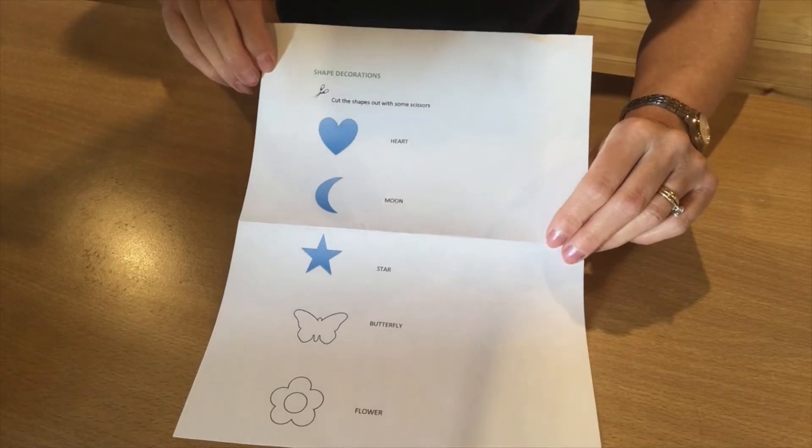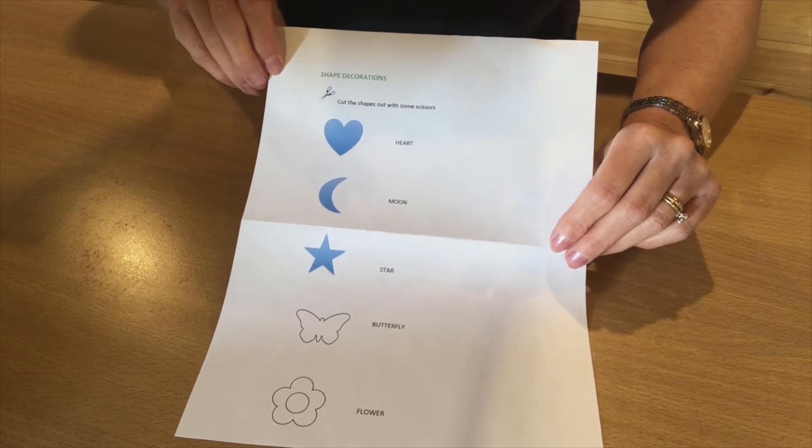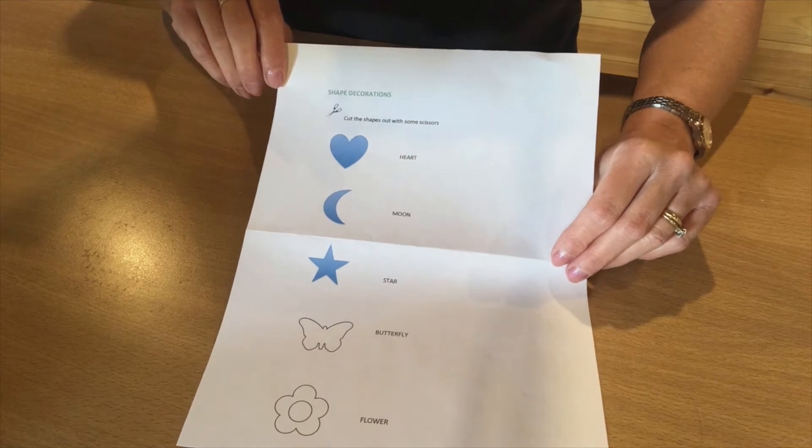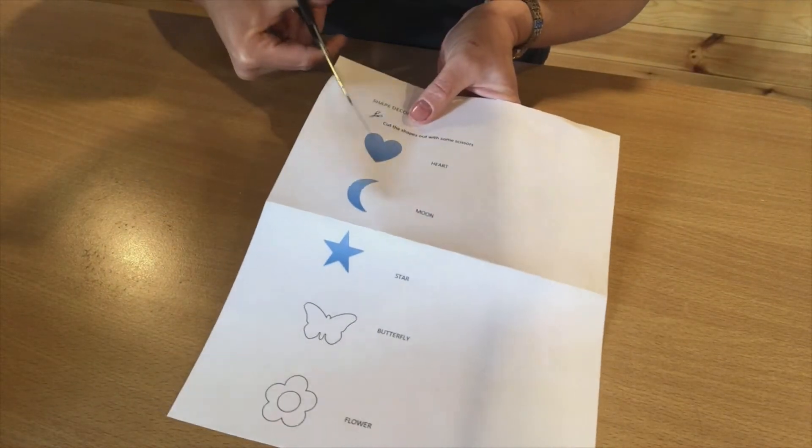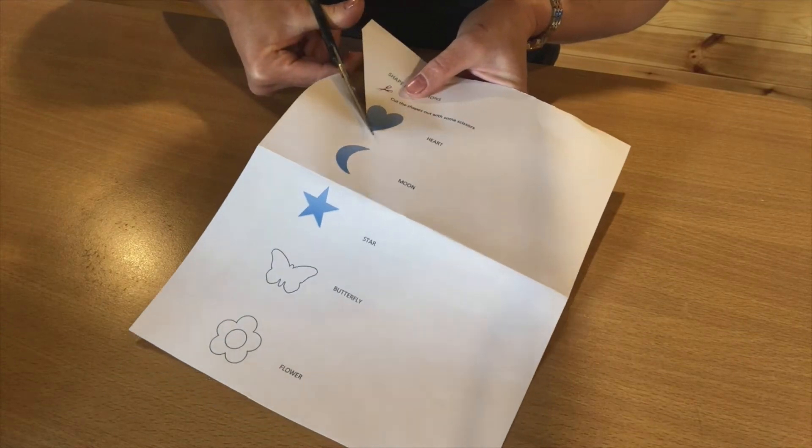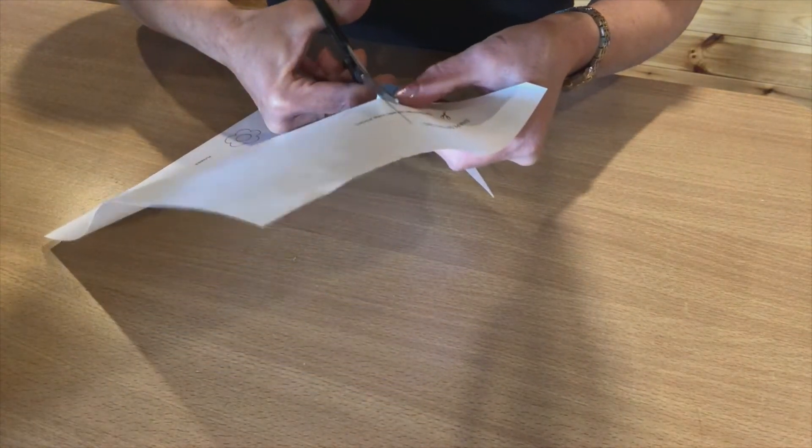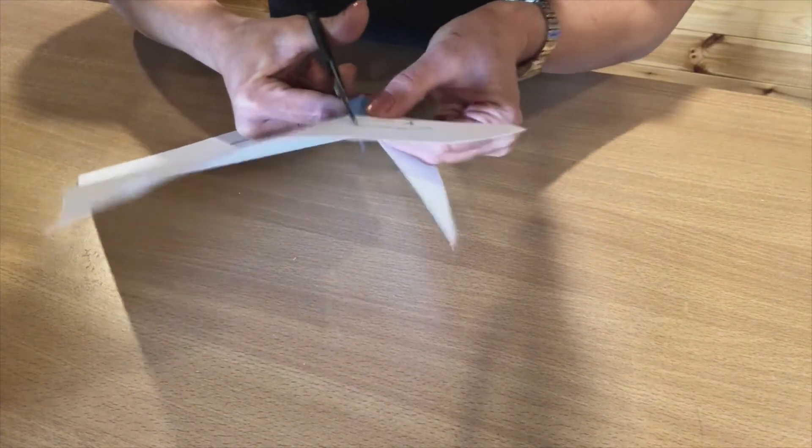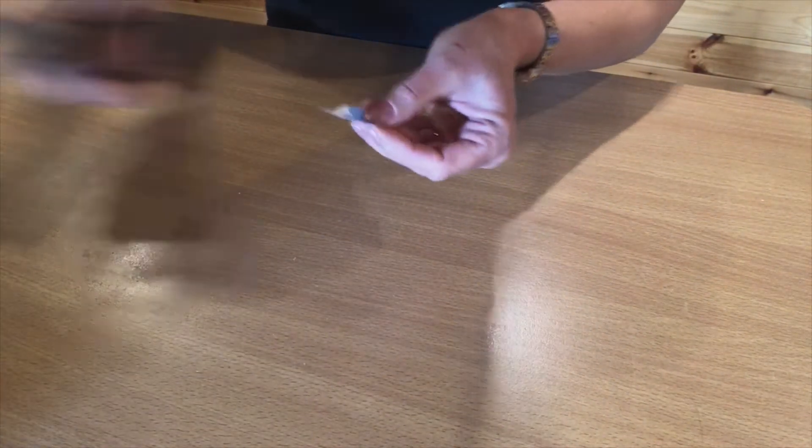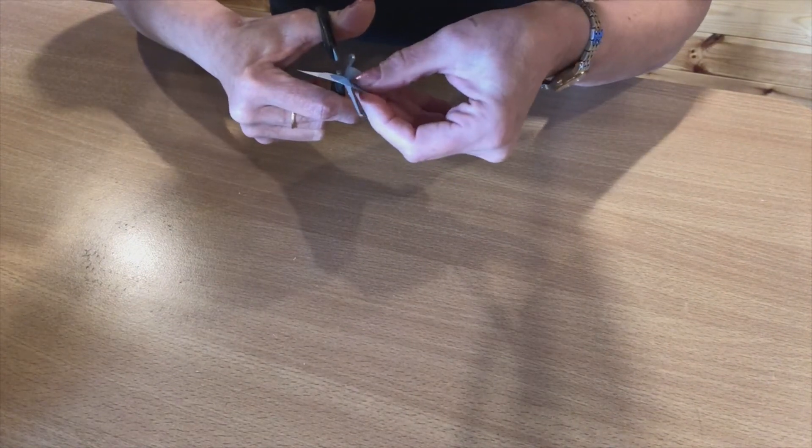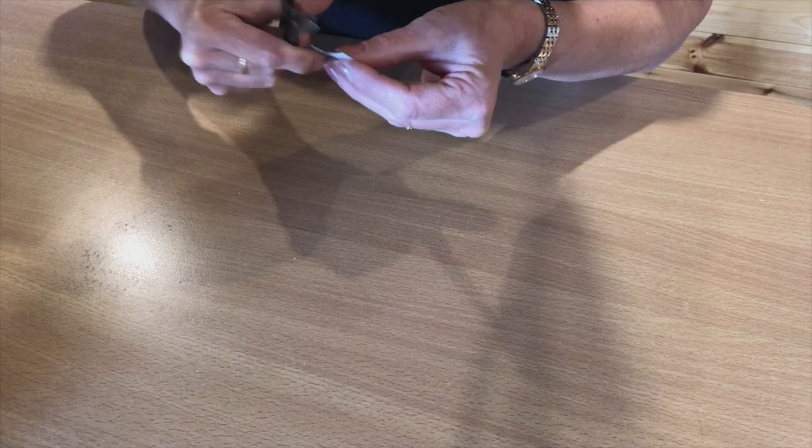In the kit you also receive different shape decorations to cut out and decorate your candles. First, find a pair of scissors, which we do not supply in the kit, and cut out the shapes. I'm going to cut out the heart shape. This could be a little tricky so an adult might need to help. Cut the heart shape all the way around so you have a heart shape template.